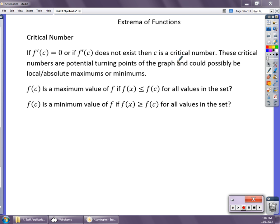Now the critical numbers are potential turning points of the graph, and what they also are is potential highest and lowest points on the graph, what we call our local and absolute maxes and mins. The difference is that the absolute are the lowest value on the graph, and the locals are just turning points. f(c) is going to be a max if f(x) is less than f(c) for all values, and it's going to be a min if it's the other way around.